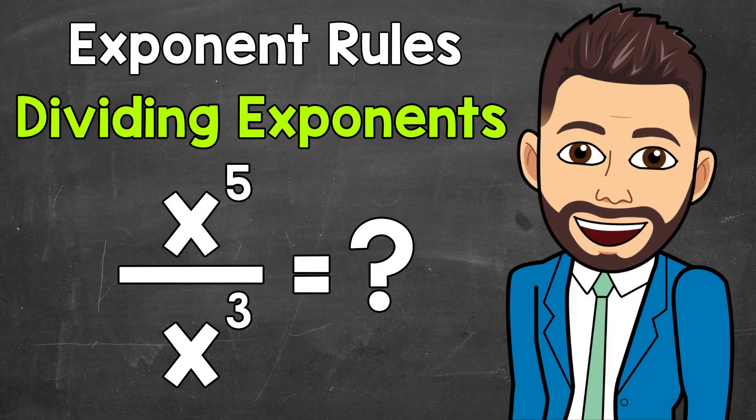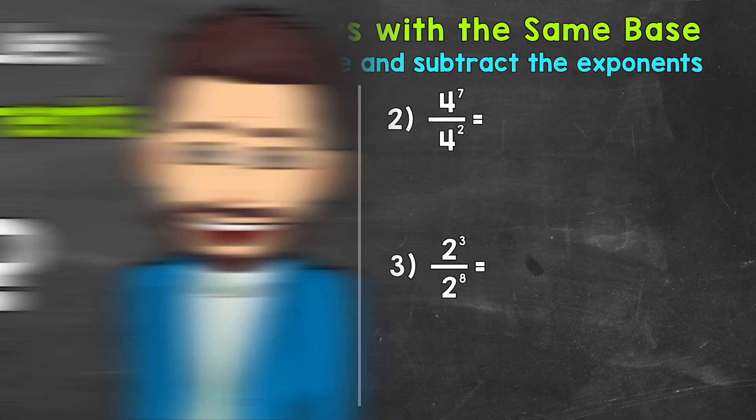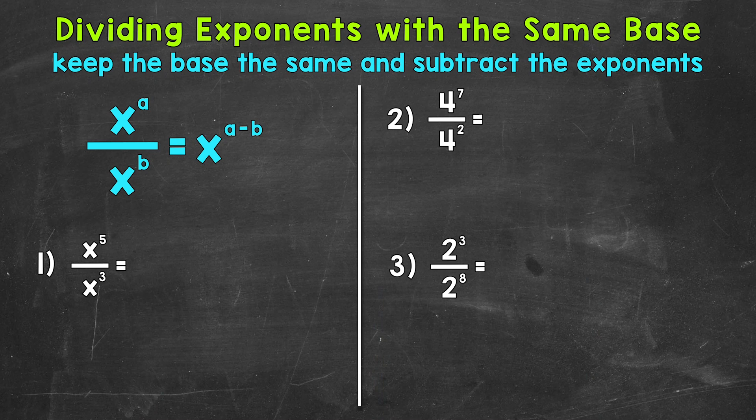Welcome to Math with Mr. J. In this video, I'm going to cover how to divide exponents with the same base. For these, we keep the base the same and then subtract the exponents. For example, if we have x to the power of a divided by x to the power of b, that equals x to the power of a minus b. Let's jump into our examples and see exactly how this works.